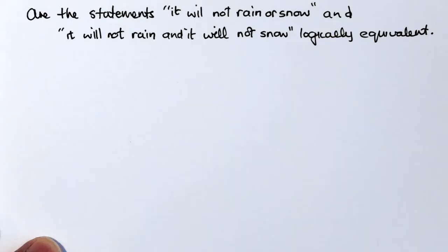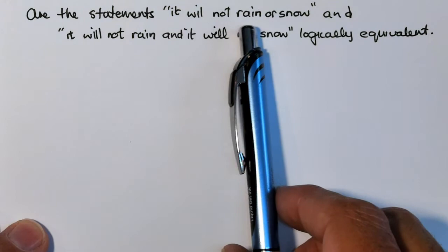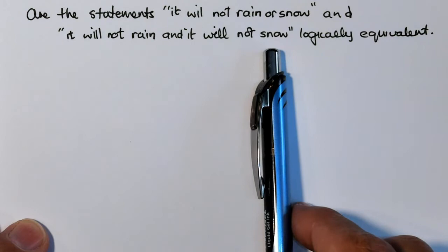So let's look at the statement. Are the statements it will not rain or snow and it will not rain and it will not snow logically equivalent?